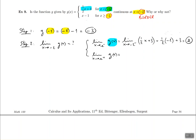Now let's look at the second limit: x approaching negative 2 from the right, meaning slightly more than negative 2. The second condition allows x to be more than negative 2, so we use the second equation, x minus 1. We evaluate the limit as x approaches negative 2 plus of x minus 1. Plugging in negative 2 gives us negative 3.